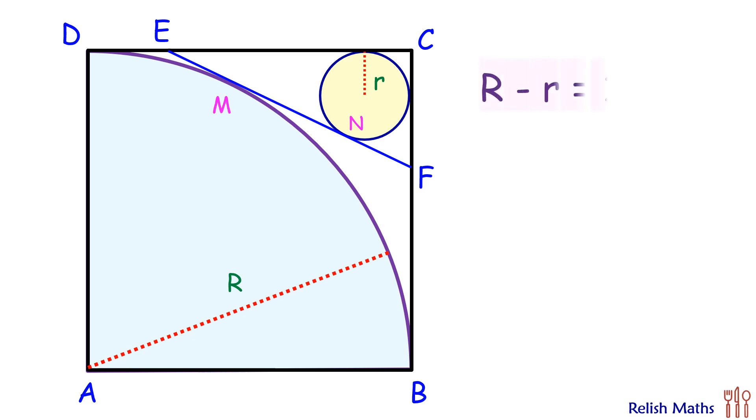The difference between the radius of the bigger circle and small circle is 10 centimeters. Using this data we have to find the length of EF.